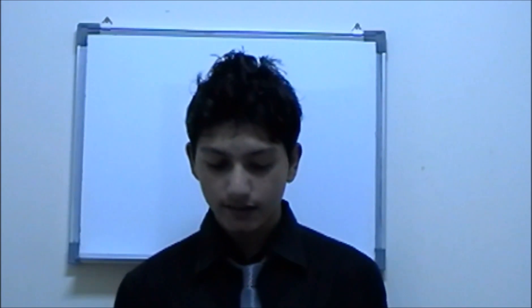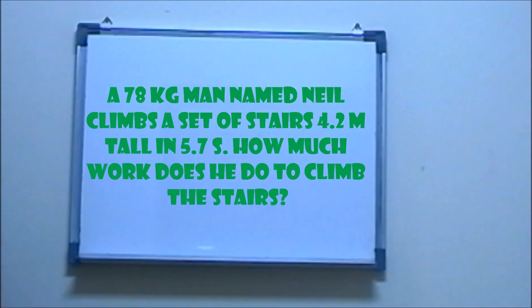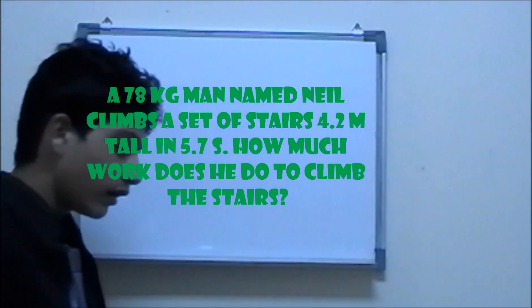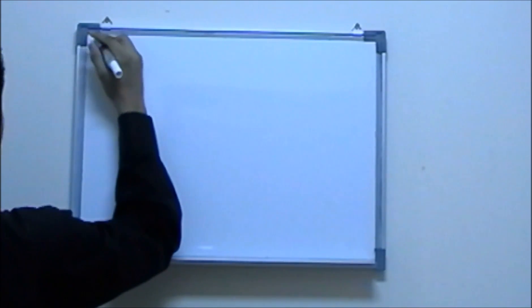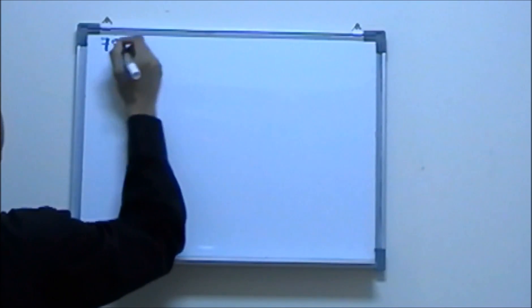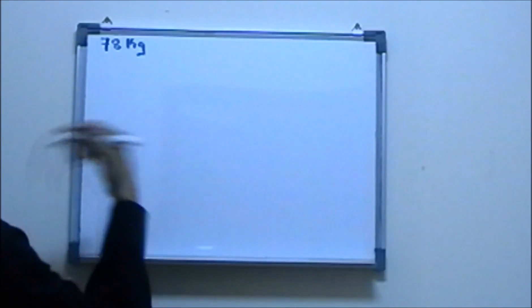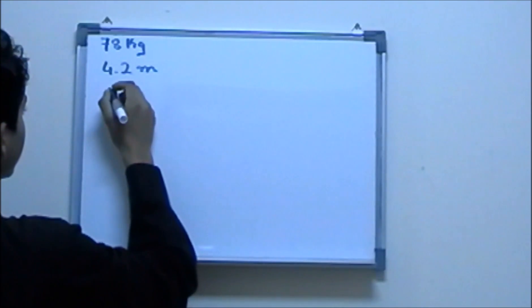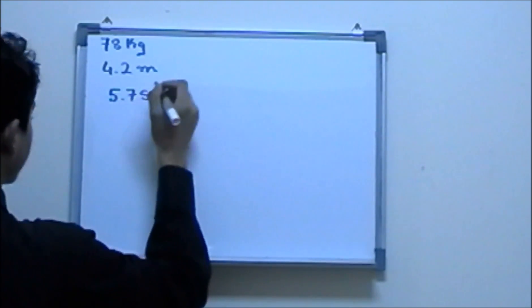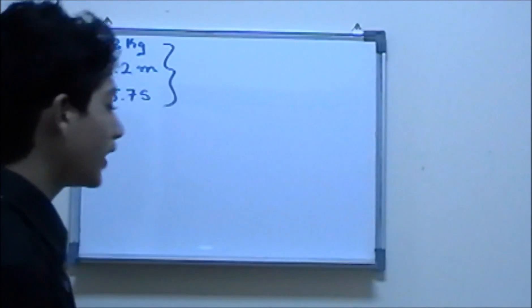So the first question is: a 78 kg man named Neil climbs a set of stairs 4.2 meters tall in 5.7 seconds. How much work does he do to climb the stairs? I am just going to move so you guys can see the question. Now, how do you solve it? We know that Neil weighs 78 kg, and he climbs a set of stairs which is 4.2 meters tall, and he climbed it in 5.7 seconds. It turns out we have this much information.